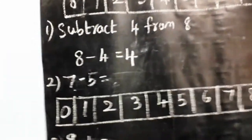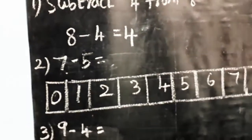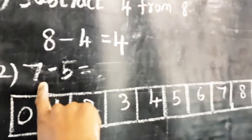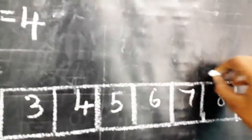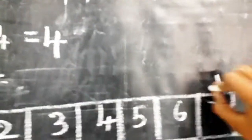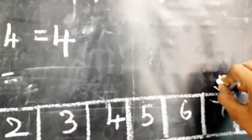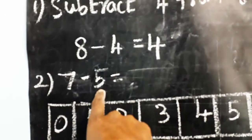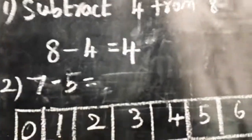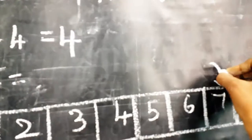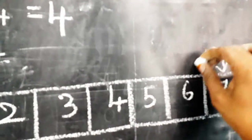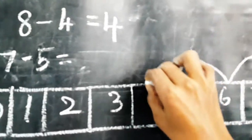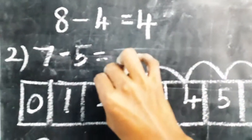Now look at here — seven minus five. Another example: seven minus five. So we can start from which number, guys? It's seven. We can start from number seven. We are going to backward of how many numbers? Yes, five numbers. You are going to backward. Just count: one, two, three, four, five.